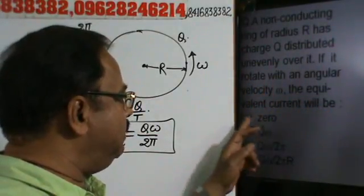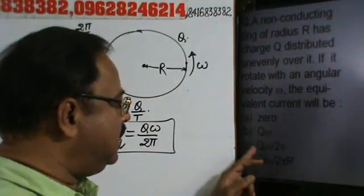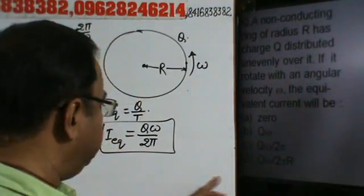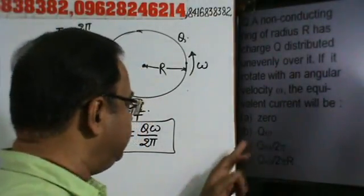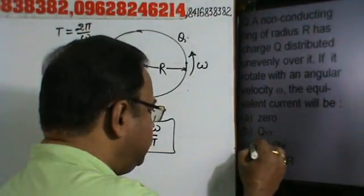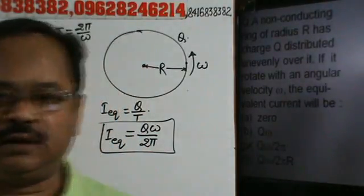The equivalent current will be equal to: 0, Qω, Qω by 2π, and Qω by 2πr. So this is Qω by 2π. C will be the correct option. This C will be the correct option. Okay. Thank you.